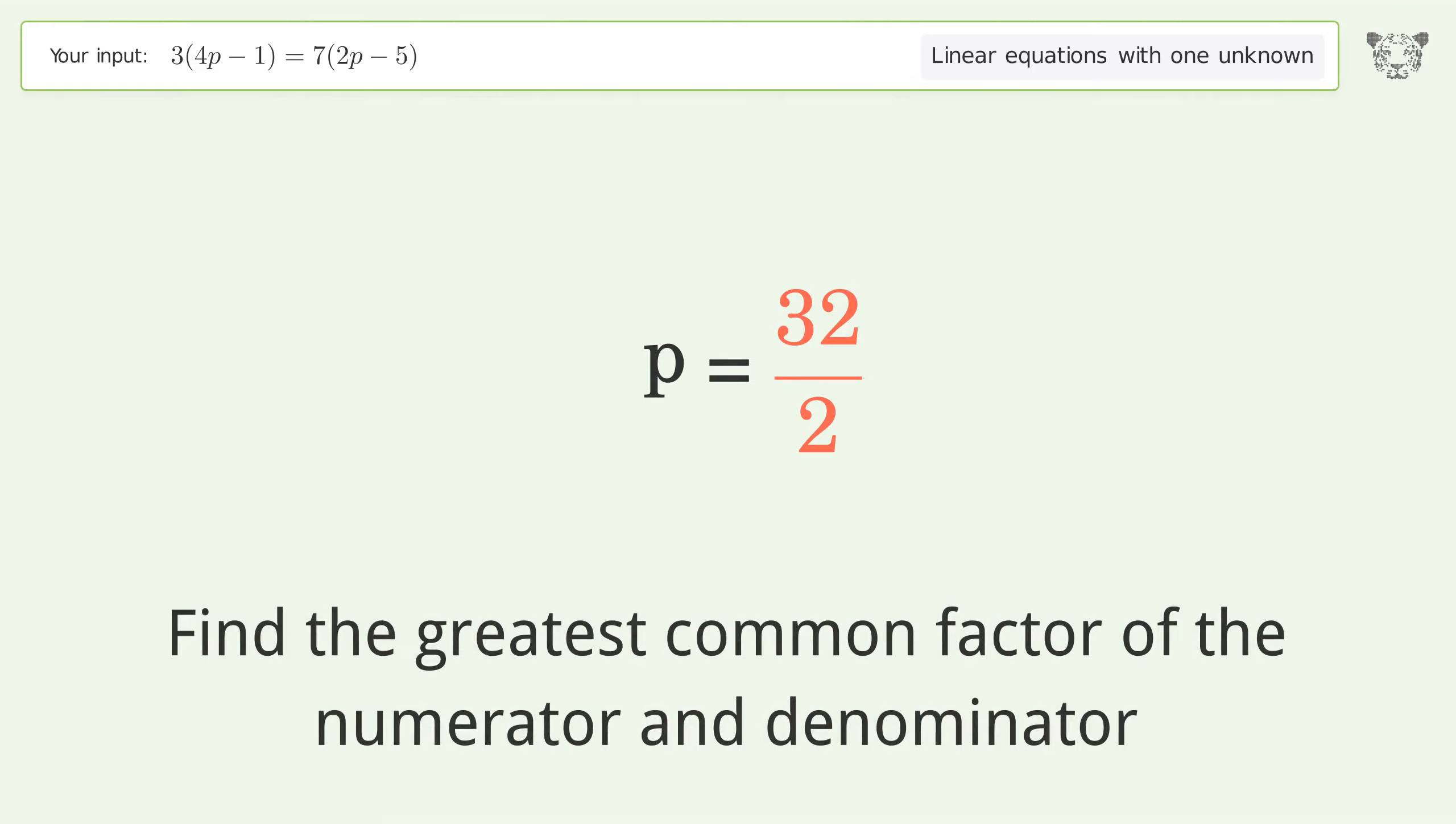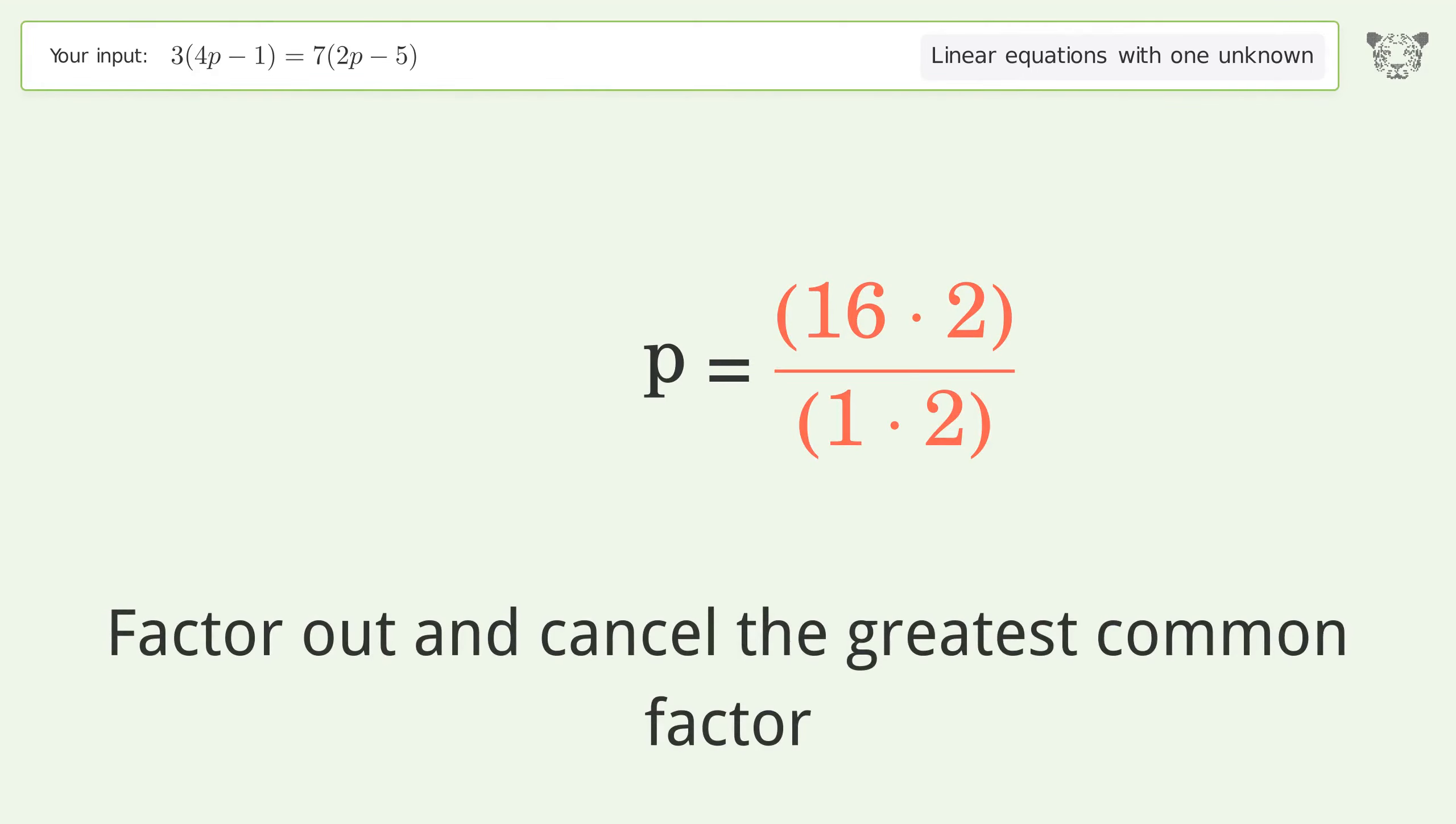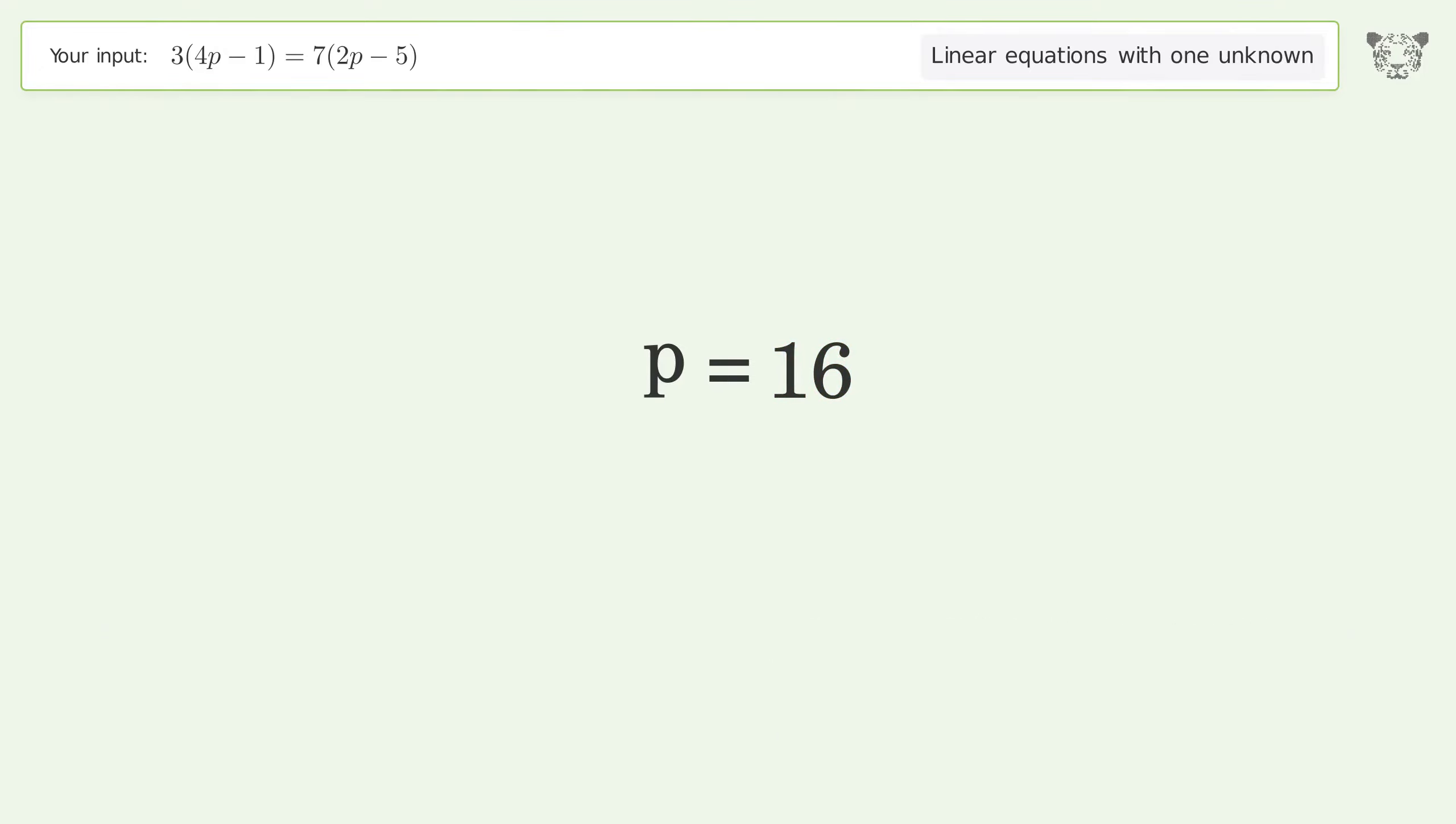Find the greatest common factor of the numerator and denominator. Factor out and cancel the greatest common factor. The final result is p equals 16.